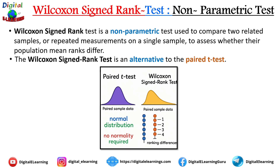The Wilcoxon's signed rank test is essentially an alternative to the paired t-test. It is used to check whether there is a significant difference between two dependent sample groups. The key difference is that the paired t-test assumes the differences between paired observations are normally distributed. If that assumption does not hold, Wilcoxon's signed rank test is a better choice because it is non-parametric — meaning it does not rely on normality. It works well with ordinal data or continuous data that are not normally distributed.